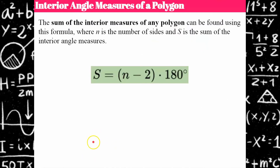Here's the first formula we're going to use today: the sum of the interior angle measures of any polygon, found using the formula S = (n - 2) × 180, where S is the sum of the interior angles and n is the number of sides. I want to show you a pattern here.